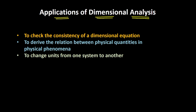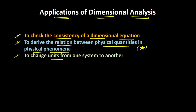First, let's recall the three important applications of dimensional analysis. The first one is to check the consistency of a dimensional equation. The second one is to derive the relation between physical quantities in a physical phenomenon — and this is the one we would be discussing in this video. The third one is to change the units from one system to another, for example from the SI system to the CGS system.